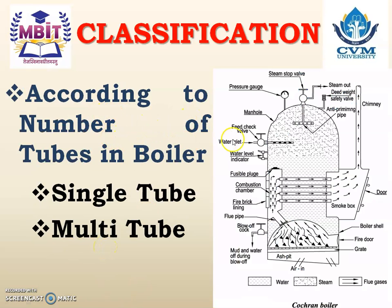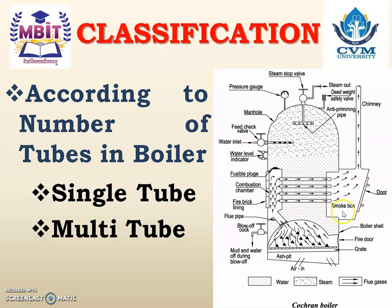According to the number of tubes in the boiler — it can be a single tube boiler or a multi-tube boiler. For example, the Cochran boiler has four tubes, making it a multi-tube boiler.